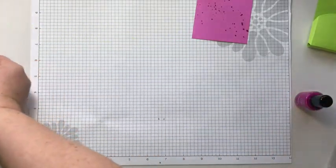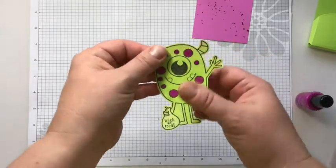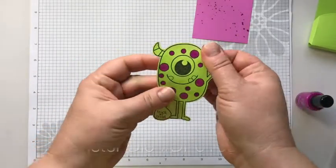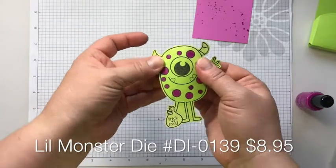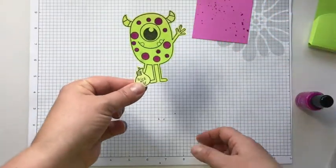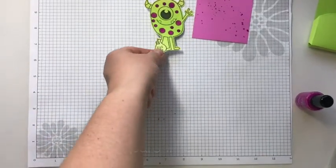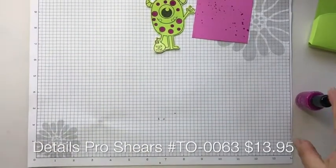So then, once you get all those done, it looks like this. And I went ahead and cut it out. There is a die for this, so you don't have to fussy cut it. I don't have the die yet, because I got this one for free, and didn't order the die at the same time. So I just used my Details Pro Shears, and that worked out great.